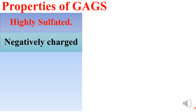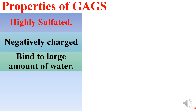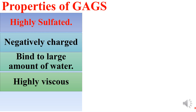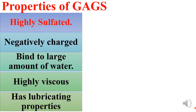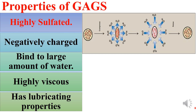GAGs are highly sulfated; because of the large number of sulfate groups they are negatively charged, bind large amounts of water, and are highly viscous with lubricating properties. Due to the high concentration of negative charges, these heteropolysaccharides tend to extend, repel each other, and are surrounded by a shell of water. When brought together they slide past each other like magnets, giving them a slippery consistency seen in mucus secretions and synovial fluid.